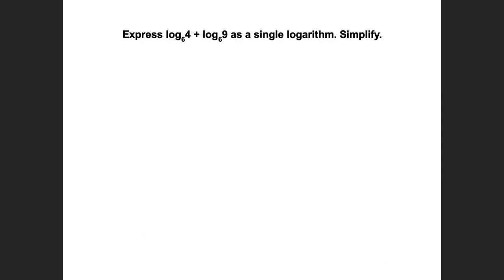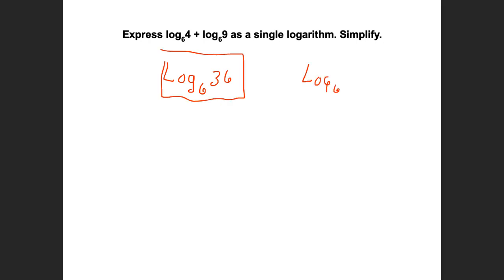For example: log base 6 of 4 plus log base 6 of 9. How can you rewrite that as a single logarithm? That would be log base 6 of 4 times 9. I want you to take it all the way down to log base 6 of 36 — that's what I'm looking for. It's not wrong to write log base 6 of (4 times 9), but log base 6 of 36 is a little more simplified. Multiply those out if you can.